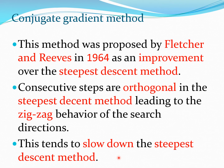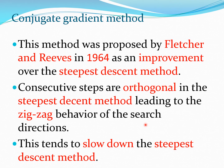We have seen in a prior lecture that one problem with the steepest descent method is that the consecutive search directions dk, dk+1 and so on are normal — that is, their dot products are zero. This leads to the zigzag behavior of the search direction, which is especially problematic as you get closer to the actual optimal point and tends to slow down the steepest descent method.